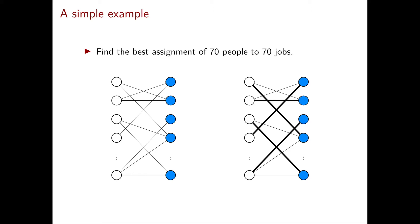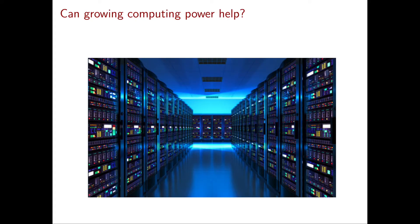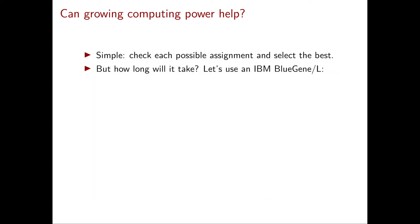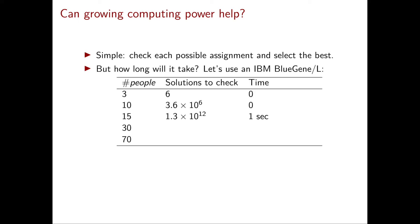Of course, this is not an algorithm we want to run by hand. But with the powerful computers we have nowadays, it shouldn't be too hard. Let's try to implement this algorithm and see how long it takes using a supercomputer like the IBM Blue Gene L. We have 70 people and 70 jobs, but let's first test with fewer. We start with three persons and three jobs — the total number of assignments is just six, which is 3 factorial. With 10 people and 10 jobs, we have 10 factorial solutions, roughly 10 to the 6. Our supercomputer takes zero seconds in both cases.